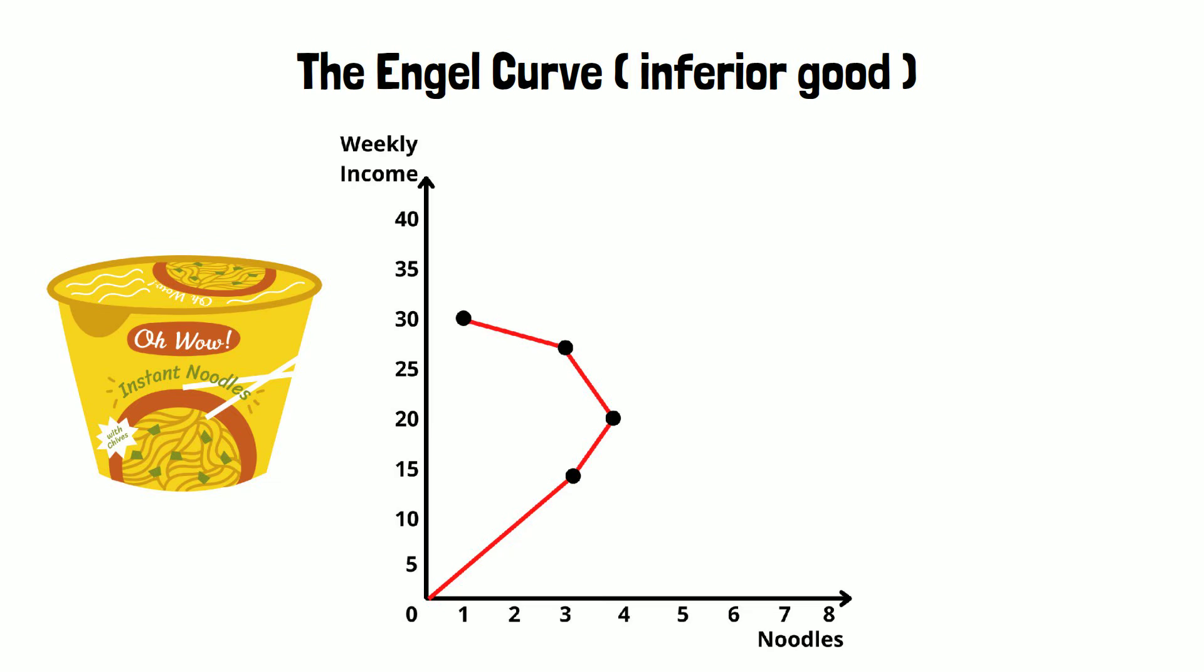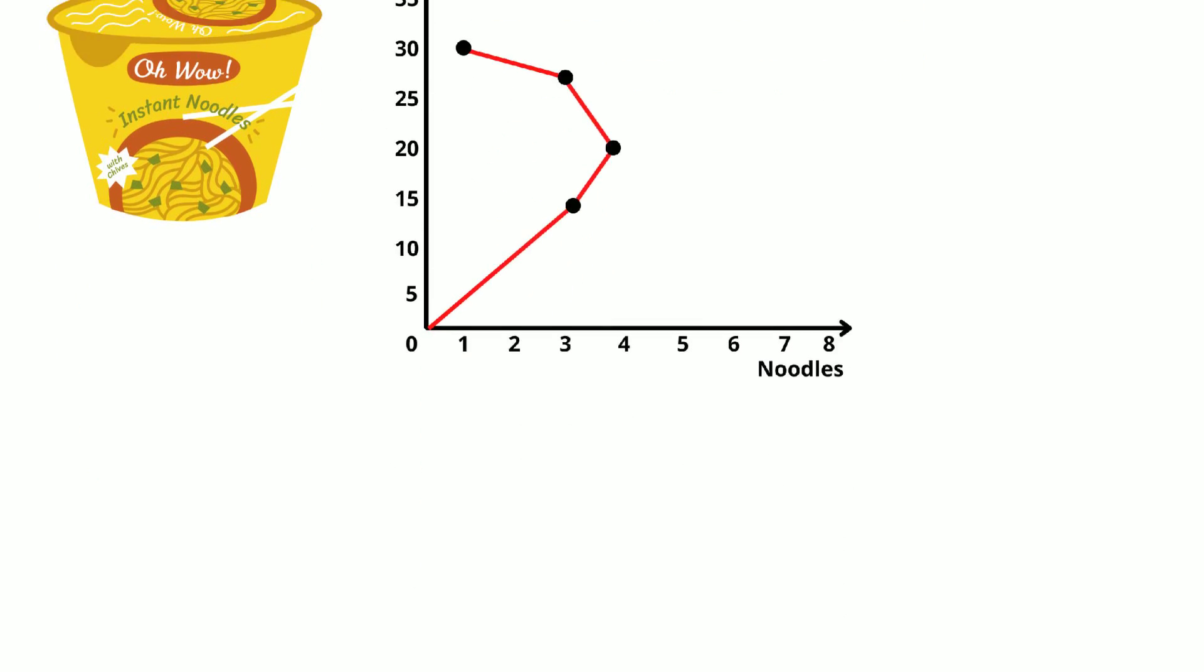At first you purchase more noodles when your income increases. But from the point when you earn 20 dollars per week you start purchasing less noodles. Why? This is because you now have the money to buy different kinds of meals. This means that pot noodles are an inferior good. You buy less noodles when your income increases.